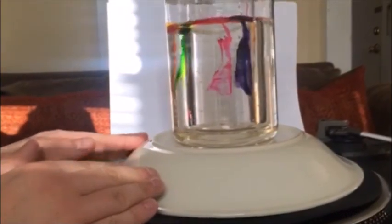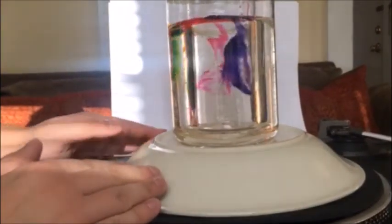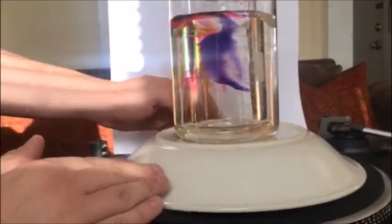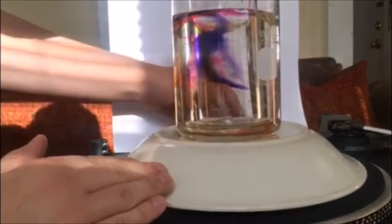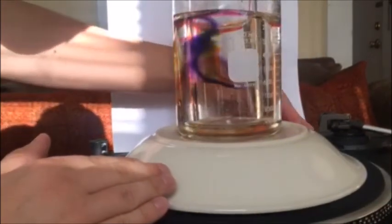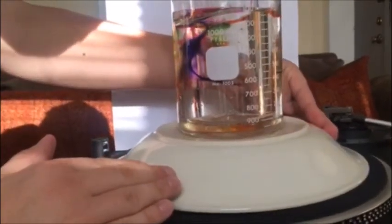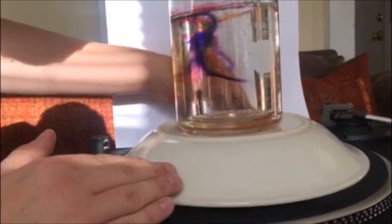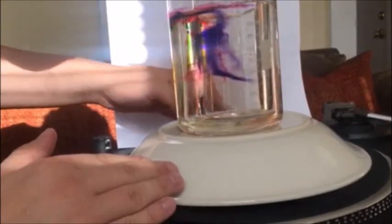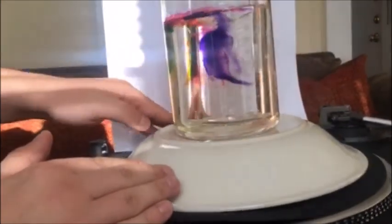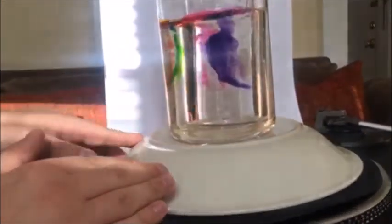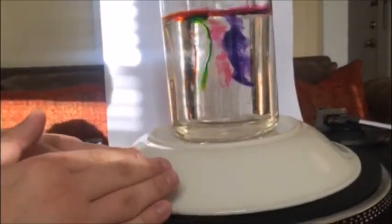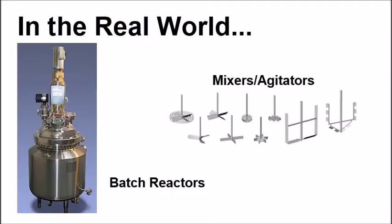Now let's try it with corn syrup. This time, you can see the dye spread in a laminar fashion. The flow of the dye is straight, and when we reverse the flow, we can nearly recover the original formation of the injected dye. Nearly all of the corn syrup remains in its original color, as convective mass transfer is low.